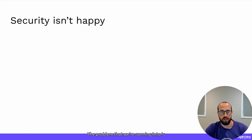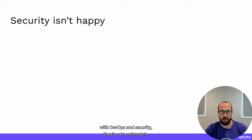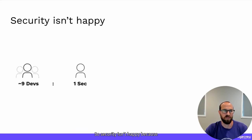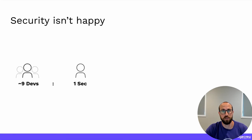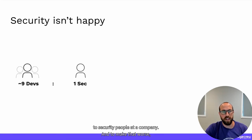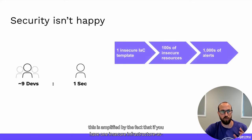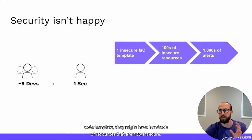The problem is that DevOps and security are at a mismatch. Security isn't happy because there's typically not a nine-to-one ratio of developers to security people at a company. And to make that worse, if you have one insecure infrastructure as code template, it might have hundreds of resources that are now insecure.